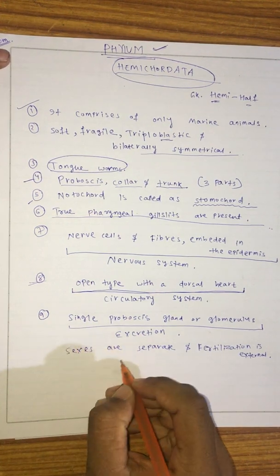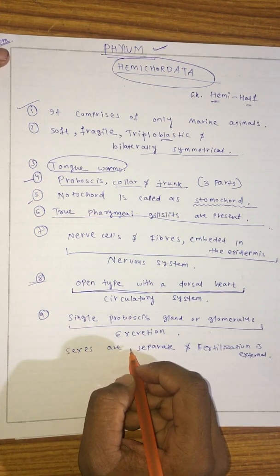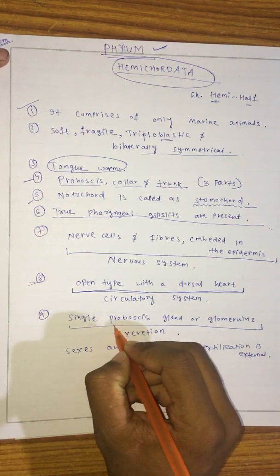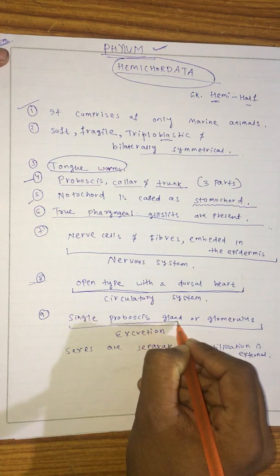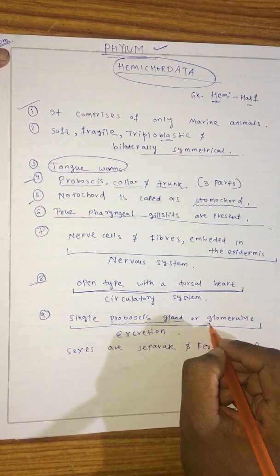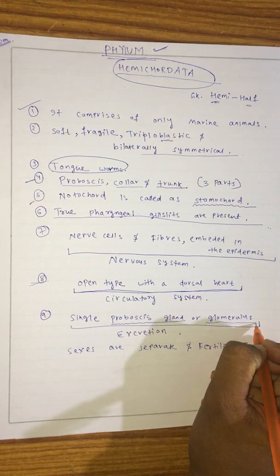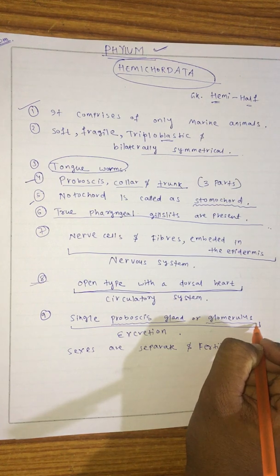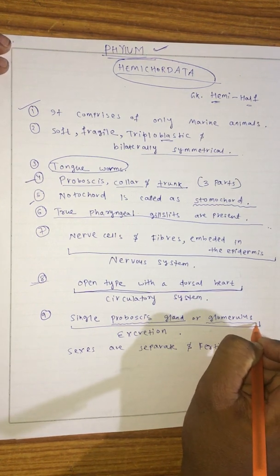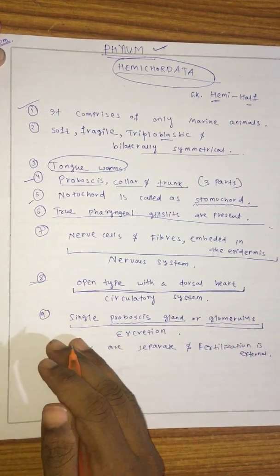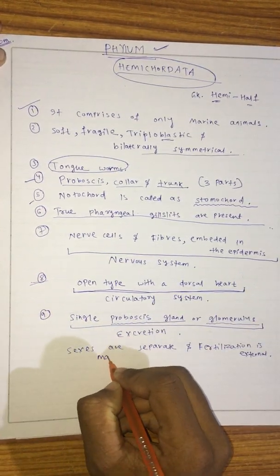Excretion occurs through a single proboscis gland, also known as the glomerulus. The sexes are separate — male and female are distinct.